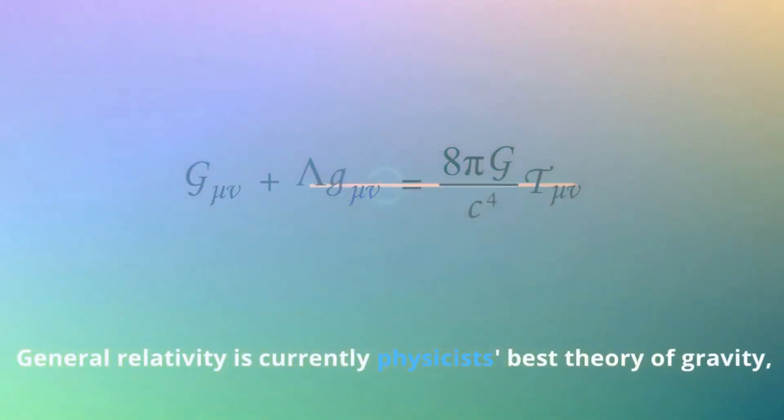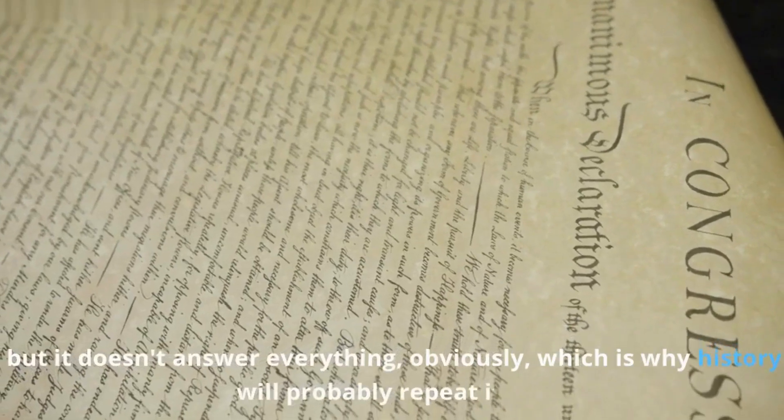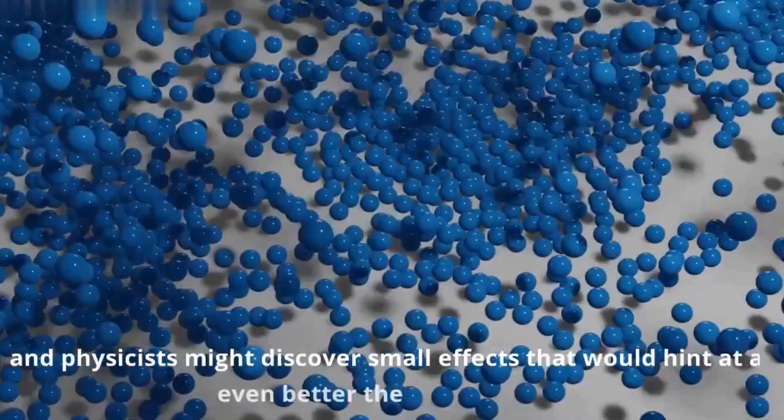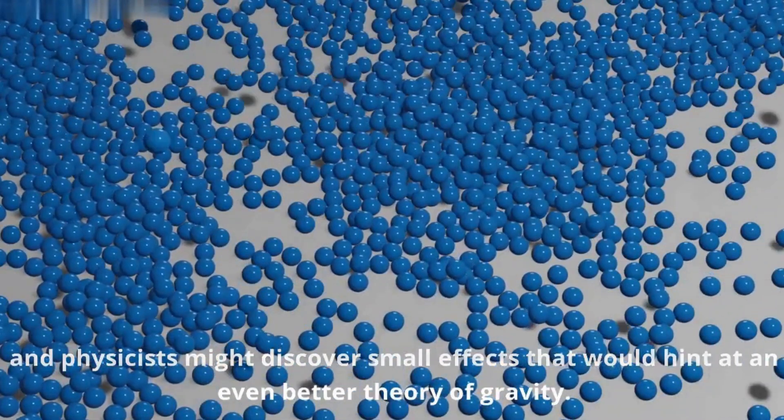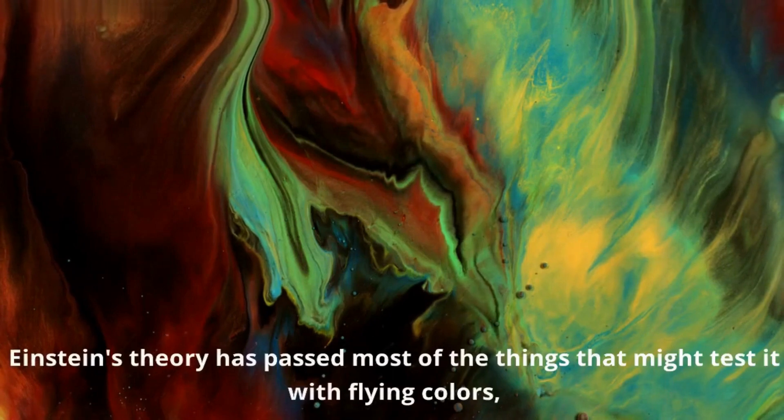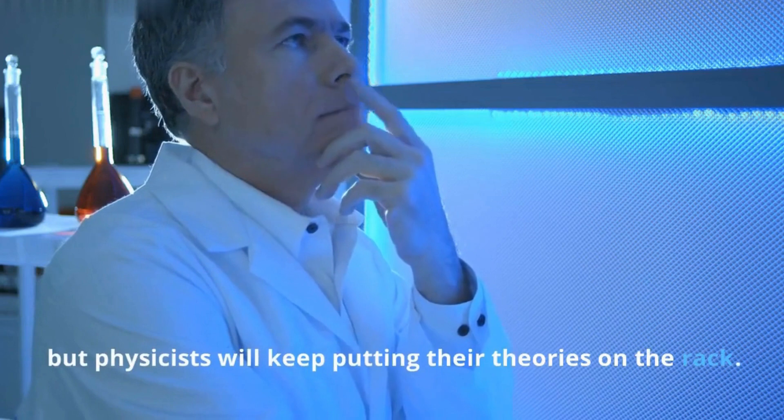General relativity is currently physicists' best theory of gravity. But it doesn't answer everything. Obviously, which is why history will probably repeat itself. And physicists might discover small effects that would hint at an even better theory of gravity. Einstein's theory has passed most of the things that might test it with flying colors. But physicists will keep putting their theories on the rack.